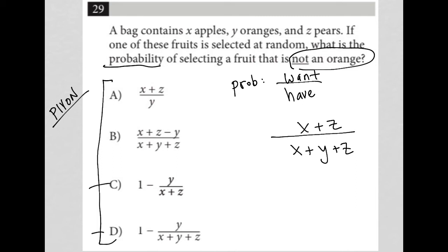But let's just backtrack and use the plug in your own number strategy, right? So I should have just done that from the very start. Let me show you how to do that. I'm going to say X equals 2, Y equals 3, and Z equals 4.